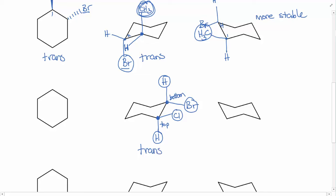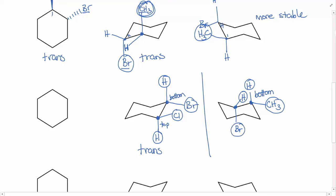Now let's draw a completely different molecule. Let's say we have a Br going straight down and a CH3 group on another carbon with hydrogens in the remaining positions. On the carbon with CH3: the hydrogen is closer to the top and the CH3 is closer to the bottom, so the non-hydrogen substituent is closer to the bottom. On the carbon with Br: the hydrogen is closer to the top and the Br is closer to the bottom, so the non-hydrogen substituent is also closer to the bottom. This is an example of a cis molecule.